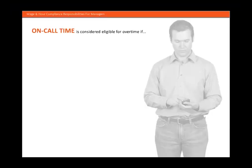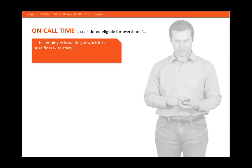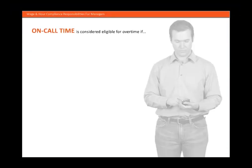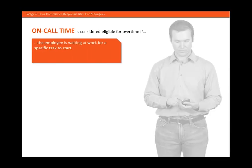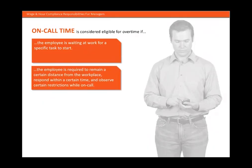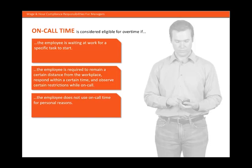On-call time is considered eligible for overtime if the following criteria are met: the employee is waiting at work for a specific task to start, such as setting up for an assembly or cleaning up after a shift; or the employee is required to remain a certain distance from the workplace, respond within a certain time frame, or observe certain restrictions while on-call; or the employee does not use that on-call time for personal reasons. If an employee carries the company's cell phone but is generally free to do whatever they want while on-call, the employee is only paid if they are called to work. But if the employee is required to remain within a certain distance of the workplace, respond within a certain time frame, or observe certain restrictions in their behavior while on-call, then that time will be paid.